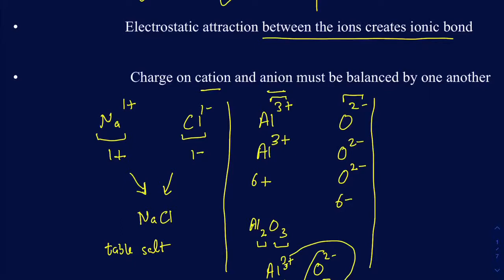There are times when you don't want to use this subscript rule. For example, if I have magnesium with a charge of 2+ and sulfur with a charge of 2−, don't use the subscript rule here. You technically need only one magnesium and one sulfur to balance the charges. So the formula is simply MgS — magnesium sulfide.